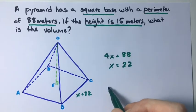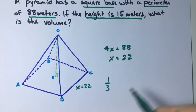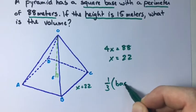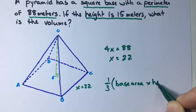The formula for the volume of a pyramid is one-third of the base area times the height.